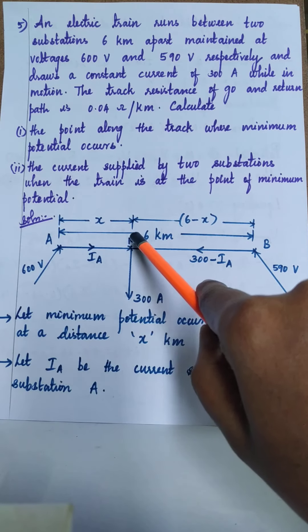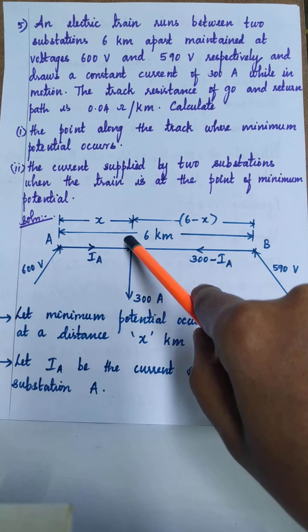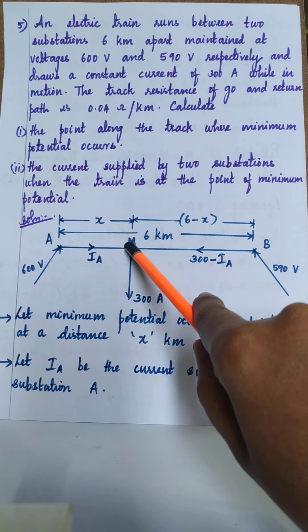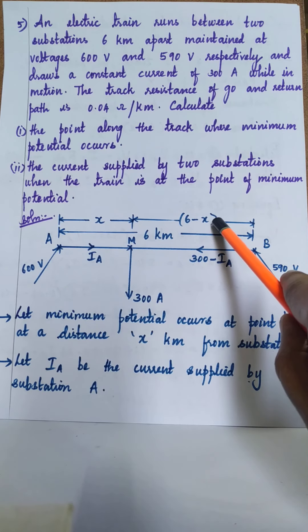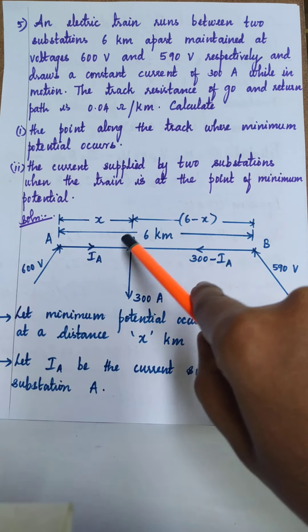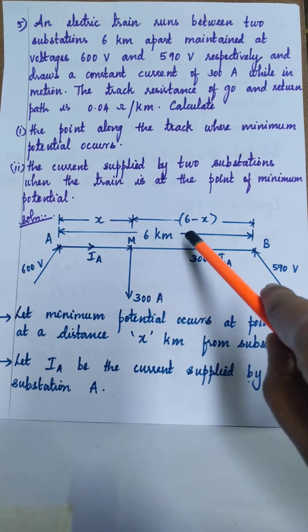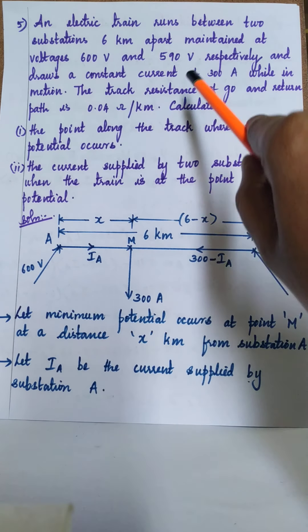Point M is where the minimum potential occurs, and it is considered to be at a distance x from substation A. Therefore, the distance between point M and substation B will be 6 minus x, since the total track distance between the two substations is 6 kilometers. So point M is at distance x from substation A and distance 6 minus x from substation B.